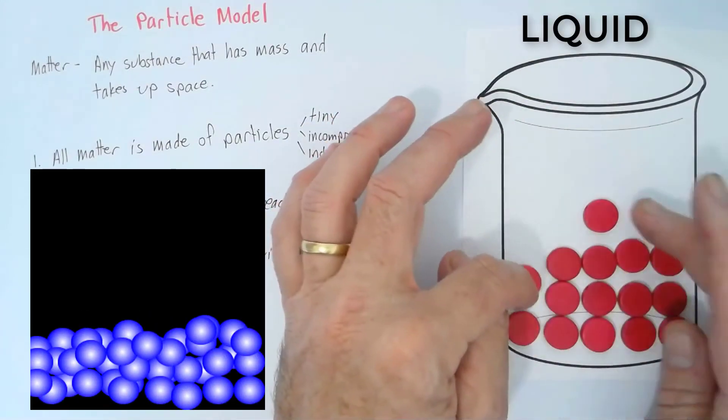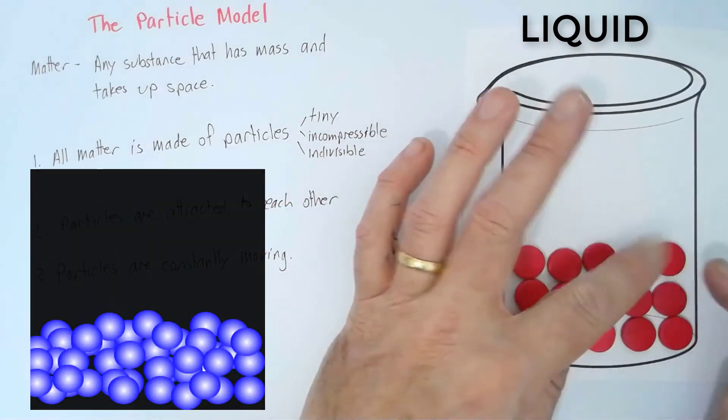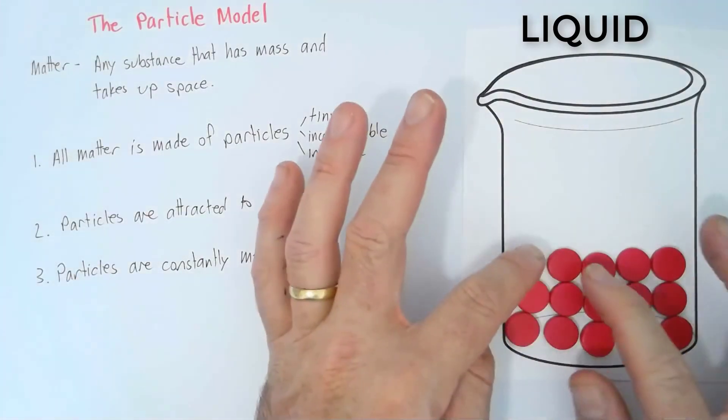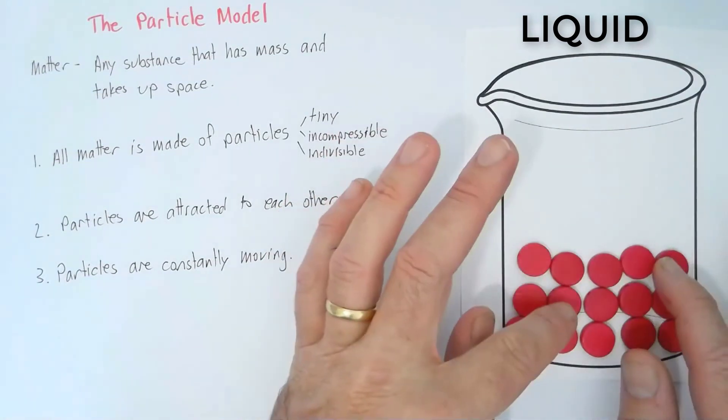A liquid takes up the shape of the container in which it's in. The particles are still very close together and in contact with each other, but they're allowed to move around because it's a fluid.